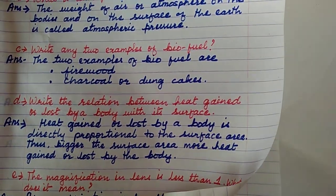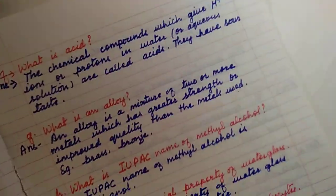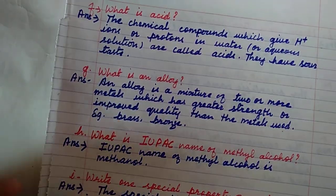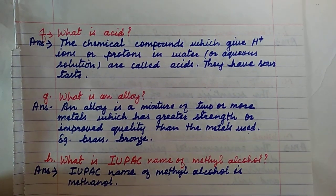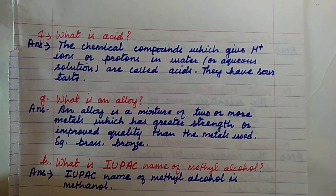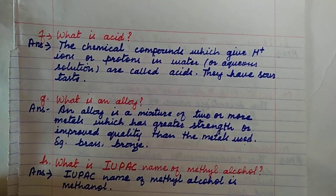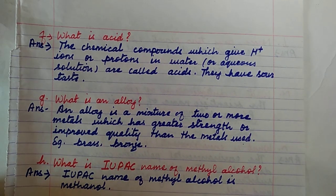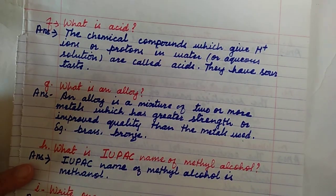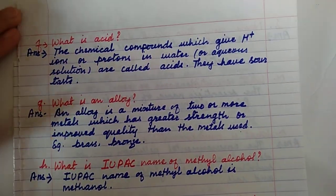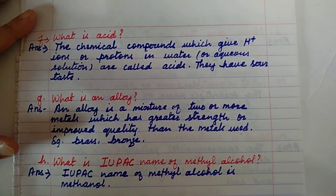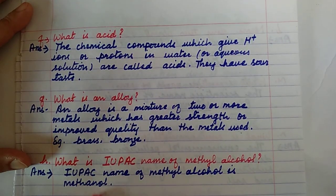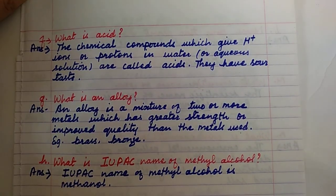Question number 1F: What is an acid? An acid is a chemical compound which gives hydrogen ions when dissolved in water. Acids are chemical compounds which give hydrogen ions in aqueous solution. They also have a sour taste.